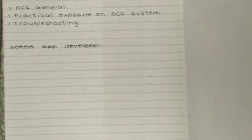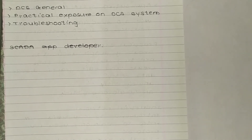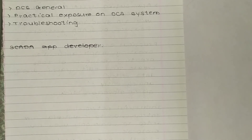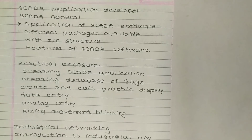In the distributed control systems section, we have to understand what DCS is in general and gain practical exposure to DCS systems — meaning what practical use DCS systems have in real applications. The third topic is troubleshooting, meaning understanding what to do when something goes wrong.